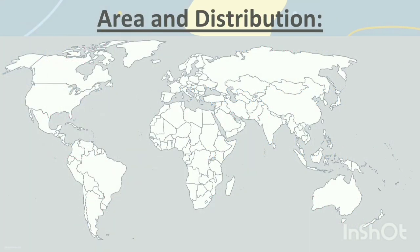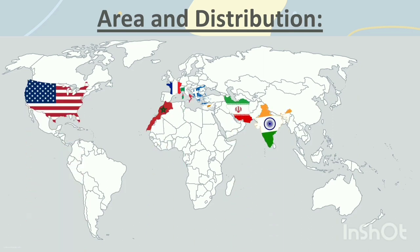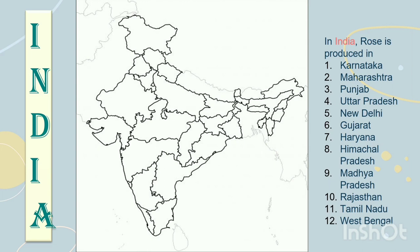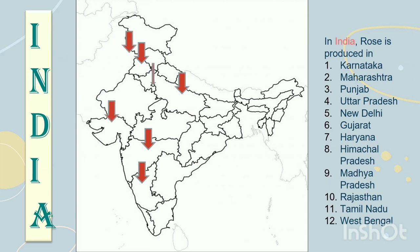Area and Distribution. Roses are being cultivated from ancient times in France, Cyprus, Greece, India, Iran, Italy, Morocco and USA for production of perfume. In India, roses are produced in Karnataka, Maharashtra, Punjab, Uttar Pradesh, New Delhi, Gujarat, Haryana, Himachal Pradesh, Madhya Pradesh, Rajasthan, Tamil Nadu and West Bengal.